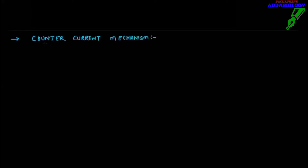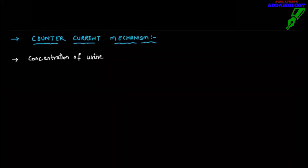That is counter current mechanism. What exactly do you mean by this word 'counter current'? Counter current means against, opposite — something that is flowing in opposite direction is called counter current. Here we are going to understand how the concentration of urine is going to decide the counter current mechanism.